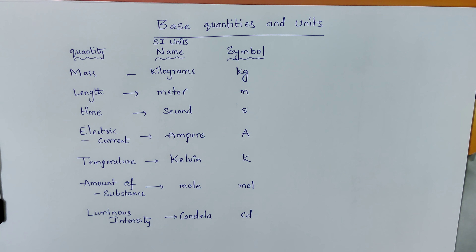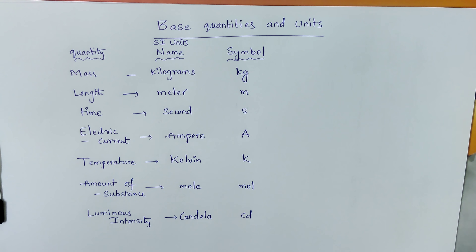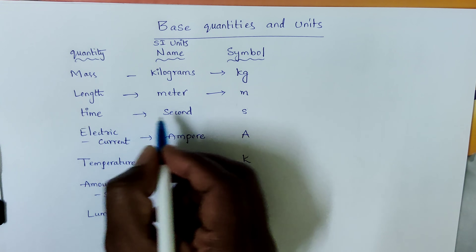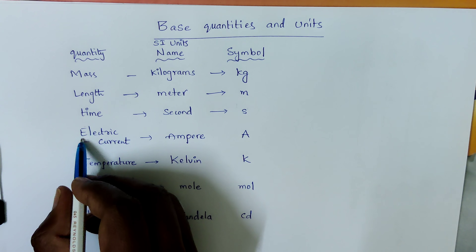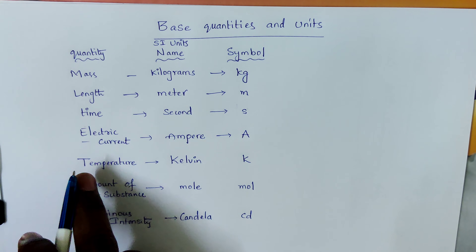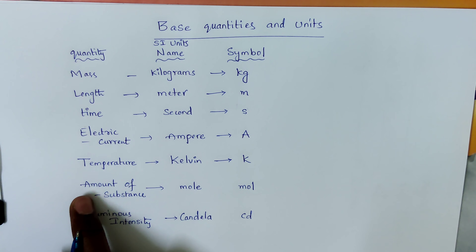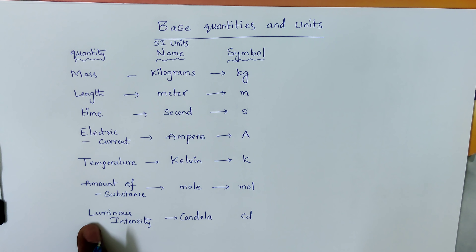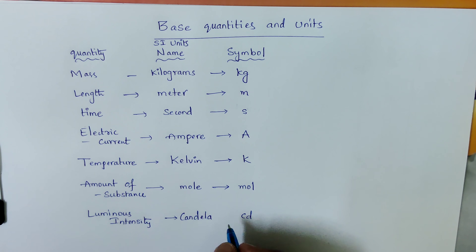Students, let me write the base quantities and their SI units clearly for you to note down. Base quantities: mass (kg), length (m), time (s), electric current (A), temperature (K), amount of substance (mol), and luminous intensity (cd — candela).